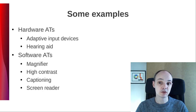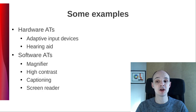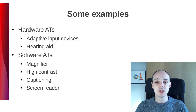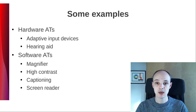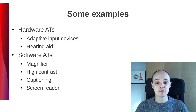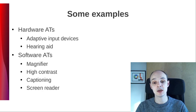ATs can be hardware or software provided. Examples of hardware ATs are adaptive input devices like special mice, keyboards, or hearing aids. Most usually you will hear about software solutions. Some are provided by the system, like a magnifier to increase the size of the visualization area around where the focus is, high contrast mode for operating system and applications, setting a bigger mouse pointer or adding a trail, captioning to provide visual feedback when you cannot receive audio, or the opposite — a screen reader to transform text into audible feedback.